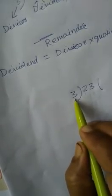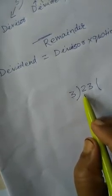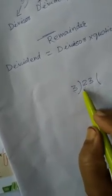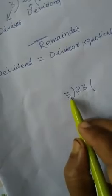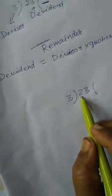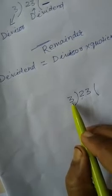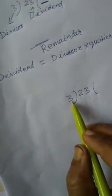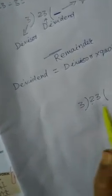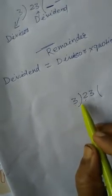Because in the divisor only one digit is there, at first we have to take one digit from the left — not from the right, from the left — and try to divide it. But here the numerical value of 2 is less than the divisor. So if we go through the table of 3, even one time we get 3 ones are 3, which is greater than the dividend number. So it cannot be divided.